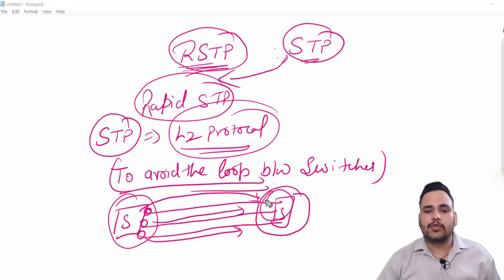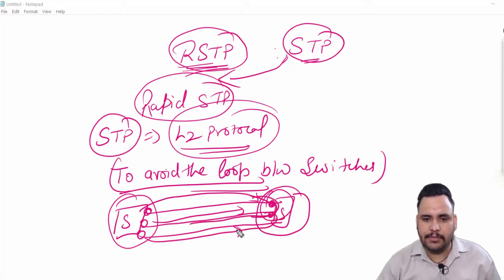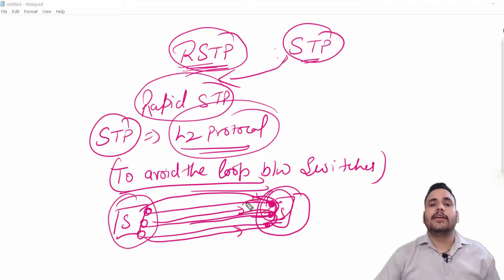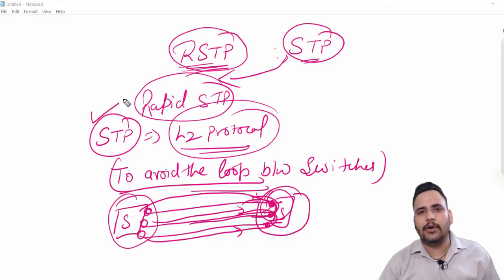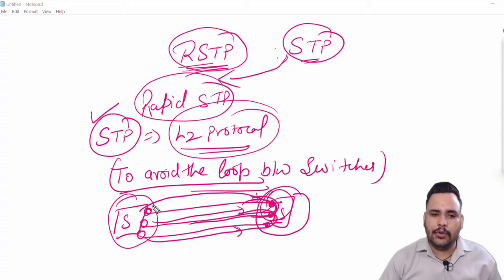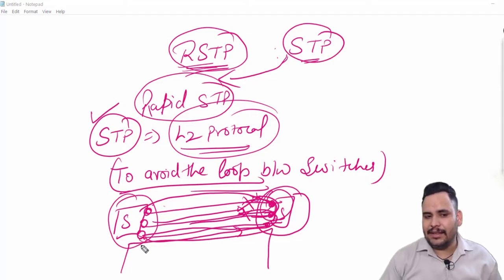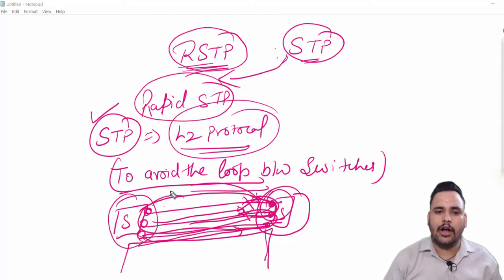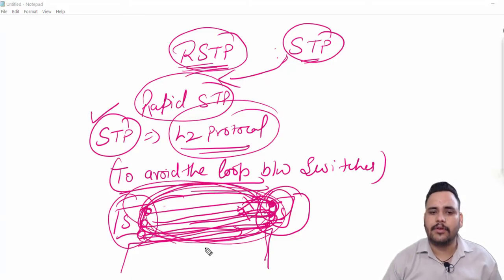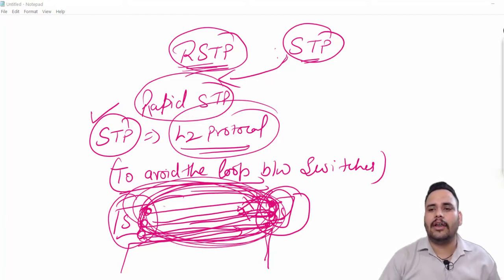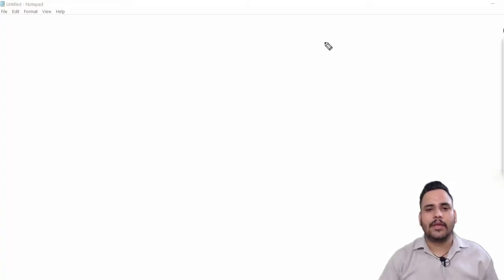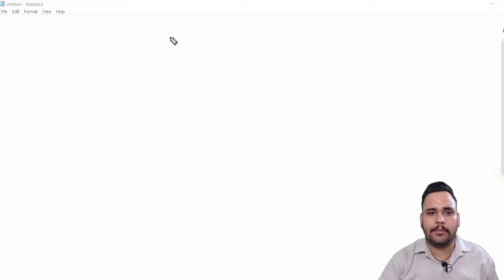The behavior of the switch is it receives information from one port and sends from another port. STP will do an election and it will keep only one port active at one time, and the other two ports will be in the blocking state. So data can be transferred without looping. To avoid the loop we use Spanning Tree Protocol, and RSTP is the version of STP.